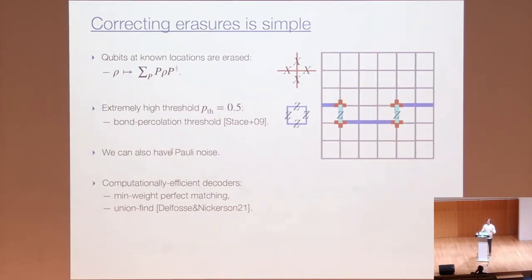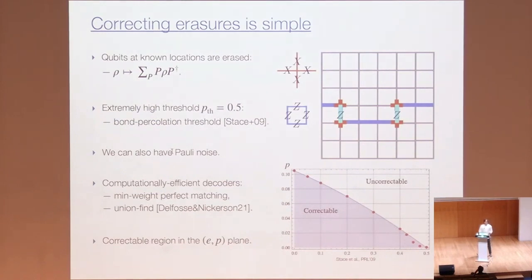In addition to erasure errors, we can also have Pauli errors in the system. To solve the decoding problem, we could invoke the minimum weight perfect matching decoder that we discussed in a previous slide, or the union-find decoder. Once we have the noise model that comprises erasure errors with rate E and Pauli errors with rate P, what we can do is study the correctable region in the EP plane. The x-axis captures the strength of the erasure noise. The y-axis captures the strength of the Pauli noise. The x-intercept would be the threshold for the erasures, which is 50%. The intercept on the y-axis is the threshold for the minimum weight perfect matching decoder for the bit flip noise, which happens to be 10.3%. In between, the boundary interpolates between those two points. The significance of the correctable region: if we are within this region, then by increasing the system size, we can reduce the logical error rate.